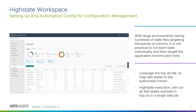The high state workspace is used to manage and monitor your system's configuration. You can see a hierarchical view of the high state runs across the infrastructure and get insights into trends related to configuration drift. Instead of manually configuring each minion one by one, you can use Aria Automation Config state management to create state files that you can apply to many minions simultaneously.